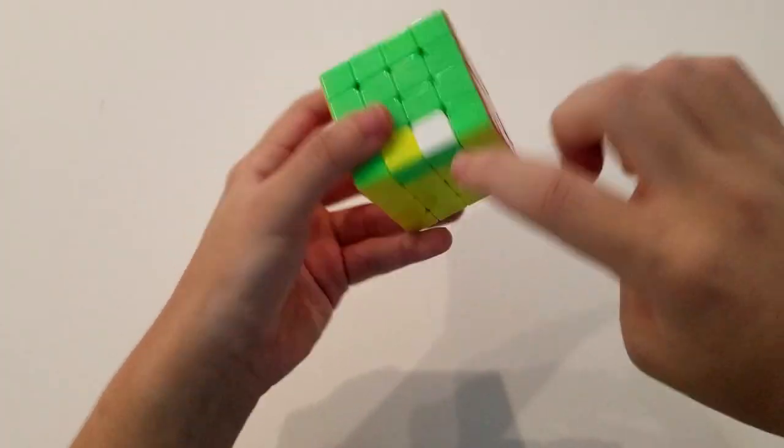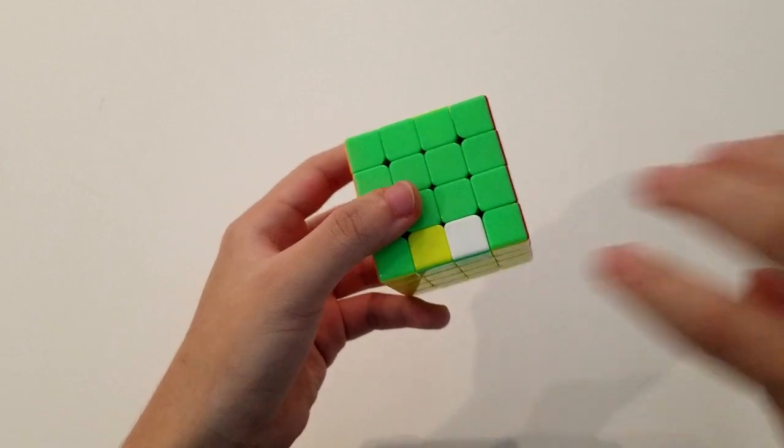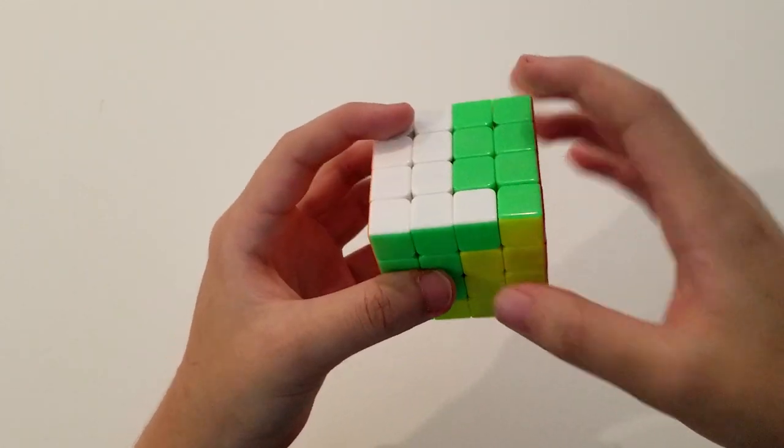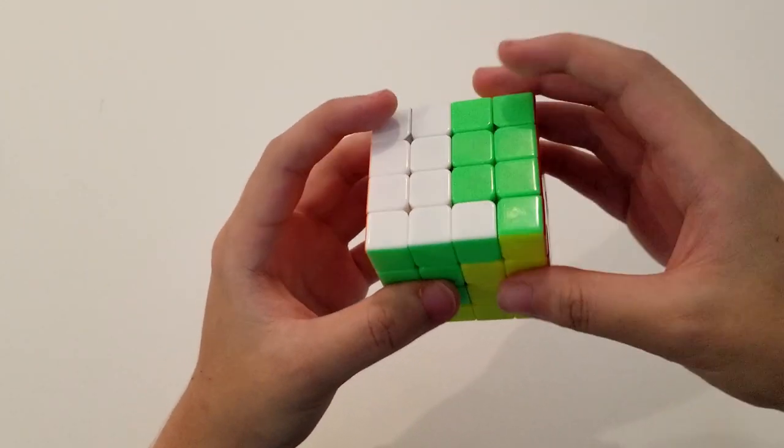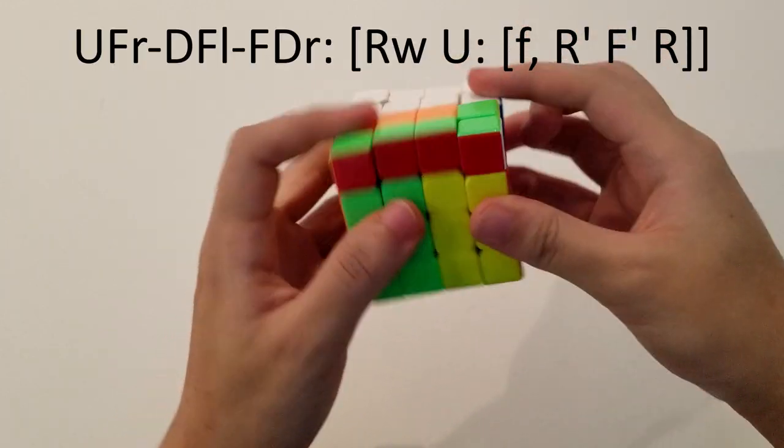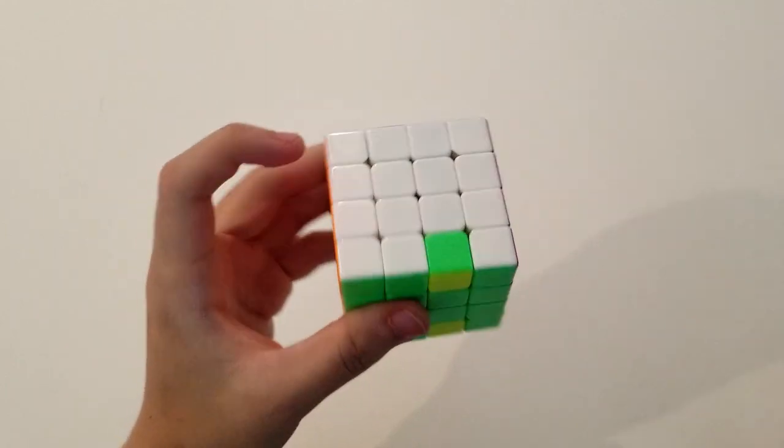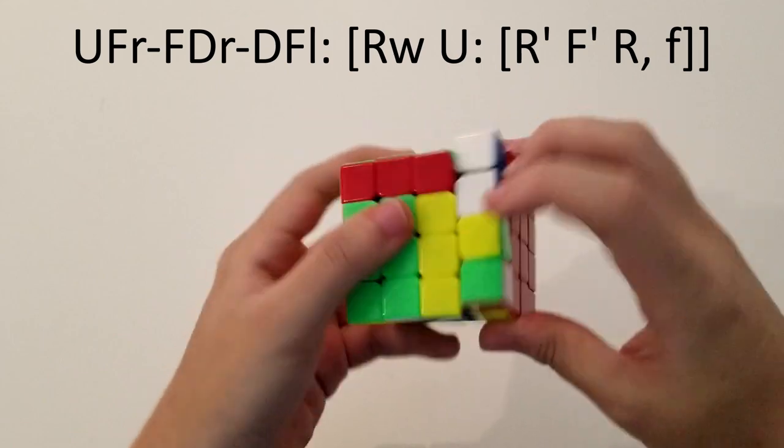This case, here to here to here, is a little bit different. What we're going to do is split up these pieces using an R-wide. And then we'll take this interchange right here, and we'll do an RFF-com just like that. And the inverse operates the same way.